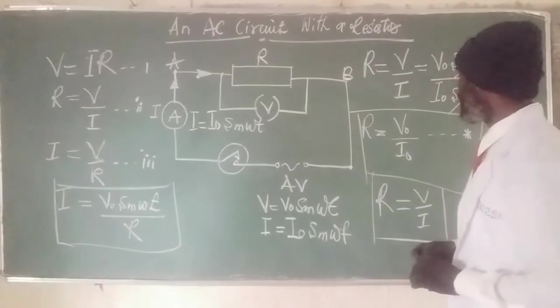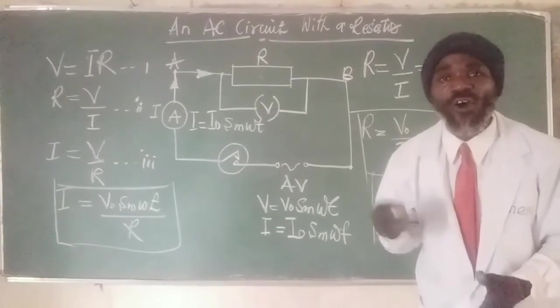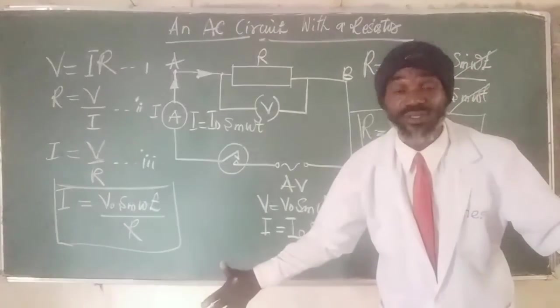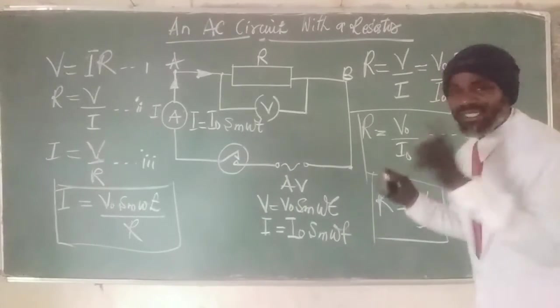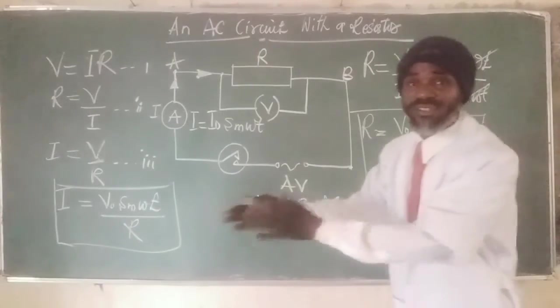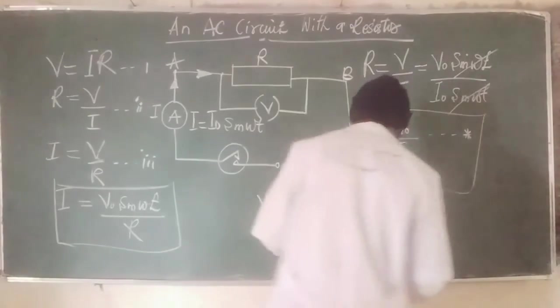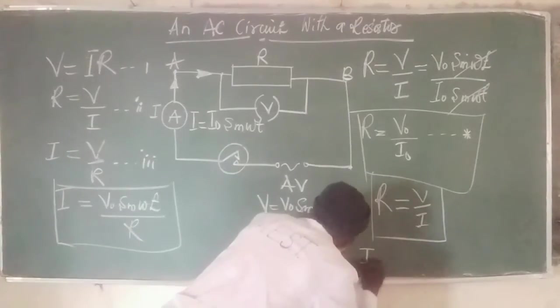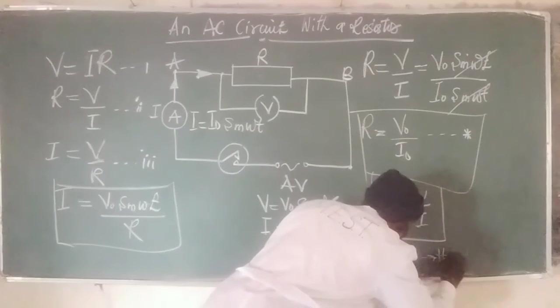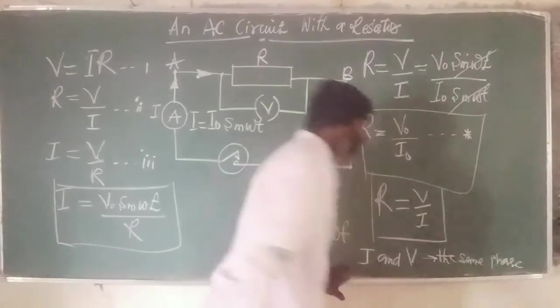But there is something we need to understand here. We need to know what happens when a resistor offering some amount of resistance is connected in an AC circuit. What happens is that the current and voltage are in the same phase. Current and voltage in the same phase.